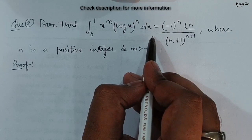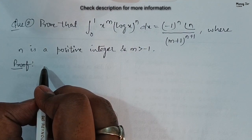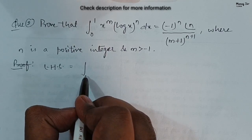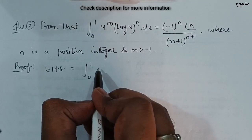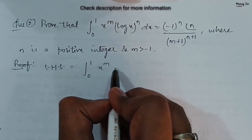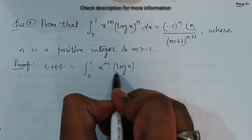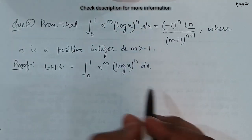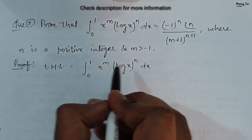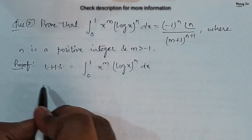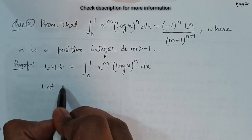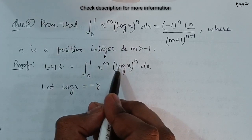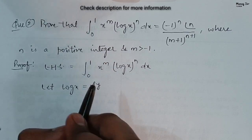We need to prove this, so we will take the LHS — the left hand side — that is the integration with limit from 0 to 1 of x to the power m times (log x) to the power n dx. Now we will take the substitution: let log x equal to minus y.